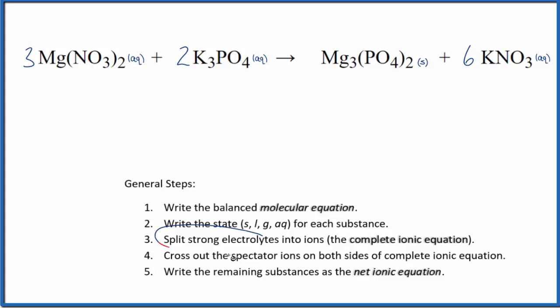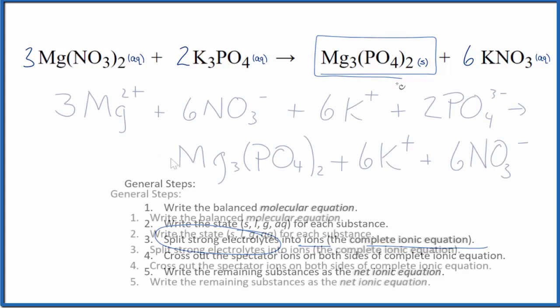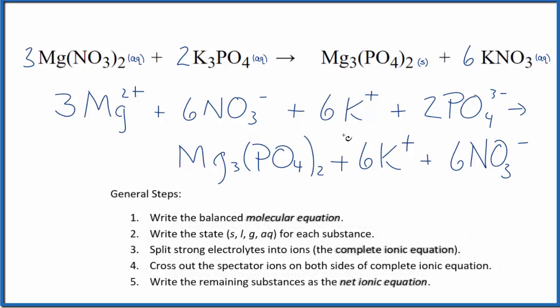Now we'll split the strong electrolytes into their ions for the complete ionic equation. We don't split the solids apart because that's not a strong electrolyte. This is a solid, so we won't split this Mg3(PO4)2 apart into ions. We'll keep it as a solid. So this is the complete ionic equation.